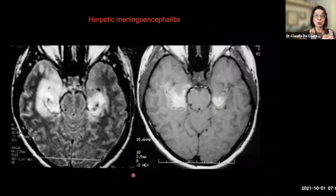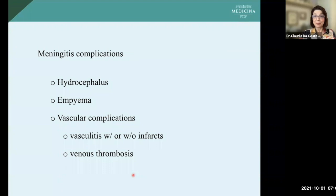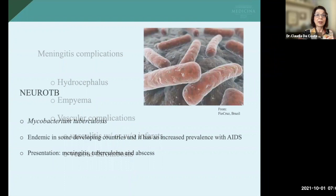The complications of meningitis are many, and usually we need imaging to make this diagnosis. We have hydrocephalus and pyema, vascular complications like vasculitis with or without infarcts, and venous thrombosis. I'm going to talk through some agents to explain the findings.